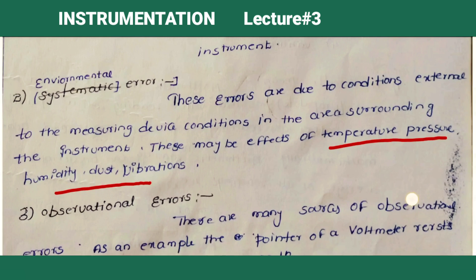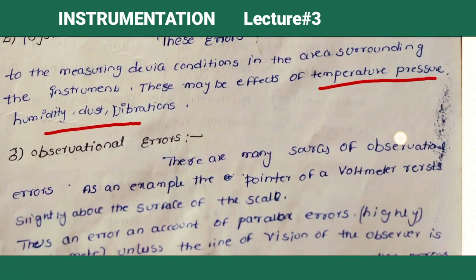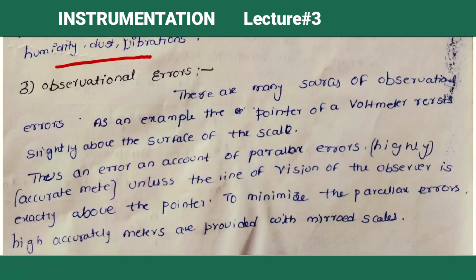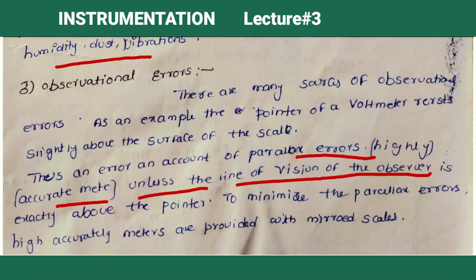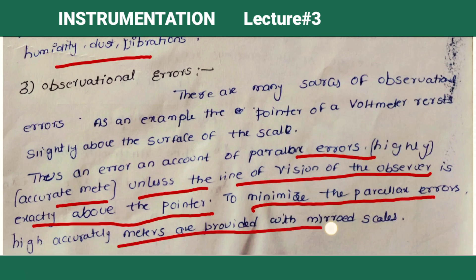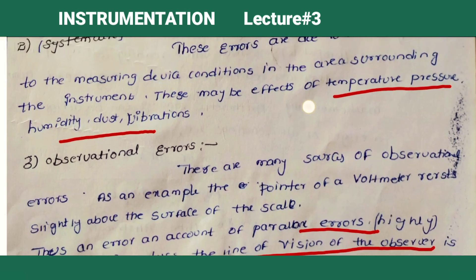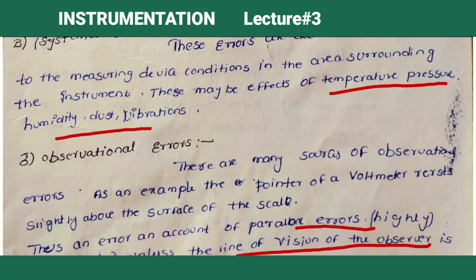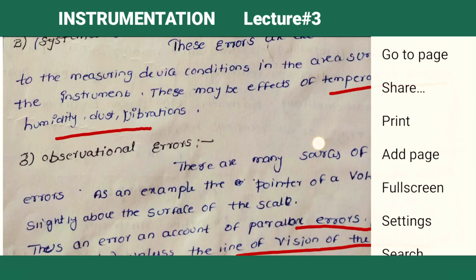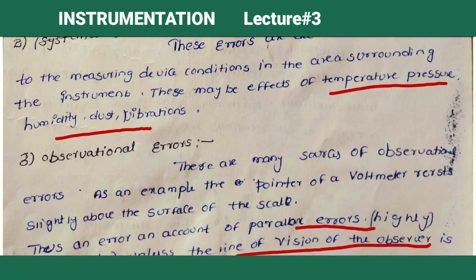Observational errors include parallax error — due to the observation angle of the person. For example, the pointer of a voltmeter: if you view it from one side, there may be a change in reading. A parallax error is an example of observational error. To minimize parallax error, meters are provided with a mirror and scale. Environmental errors are reduced by using instruments in proper normal temperature conditions, and observational errors can be reduced by providing meters with a mirror scale.